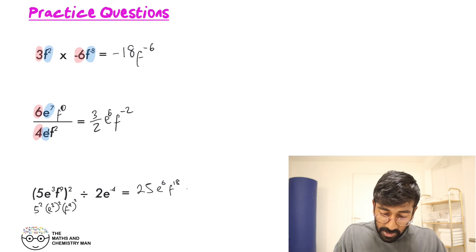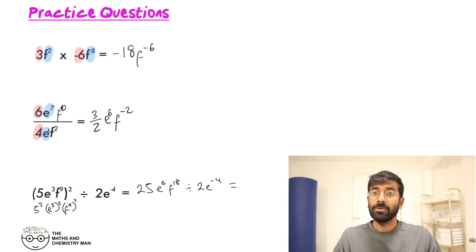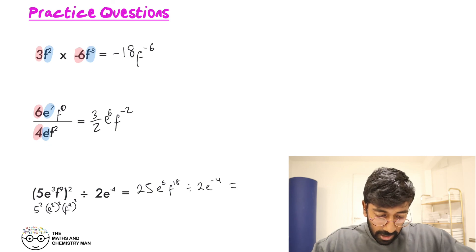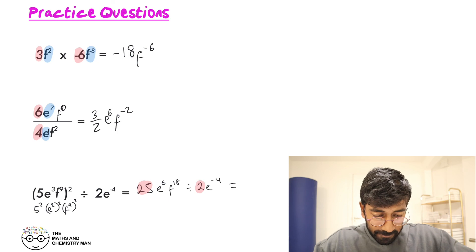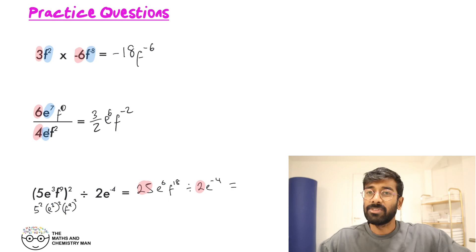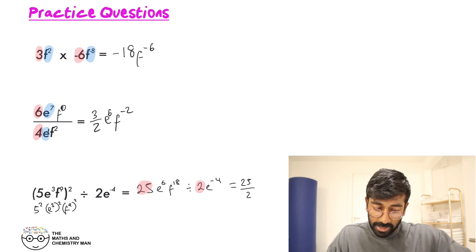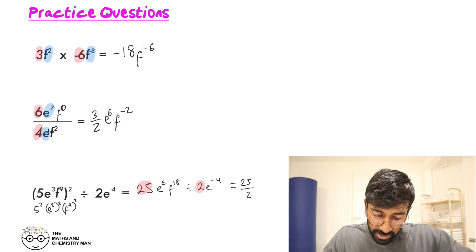And we're dividing that by 2 E to the minus 4. So let's get cracking: 25 divided by 2 — we'll just leave that as a fraction — 25 over 2.